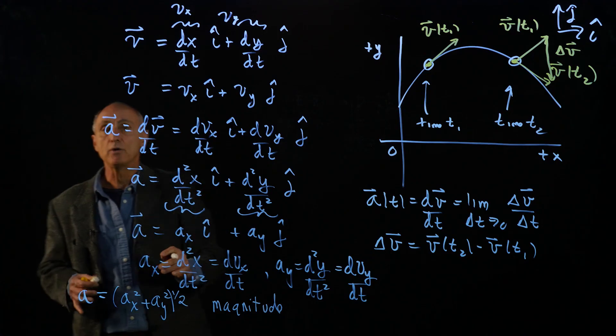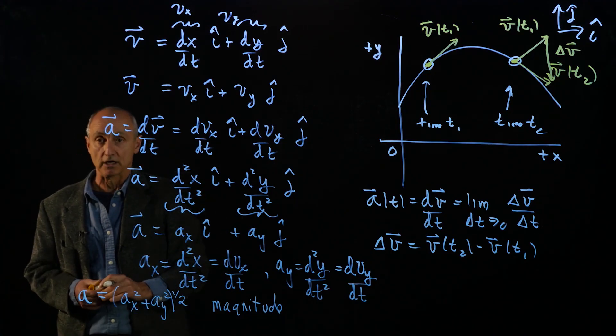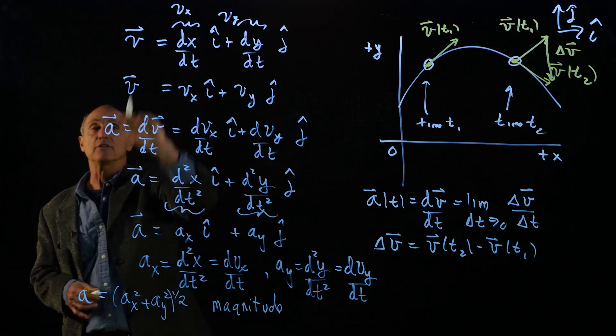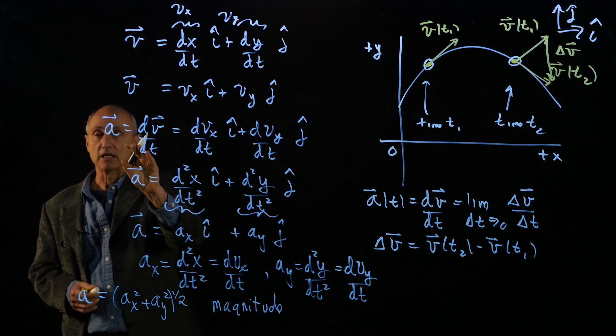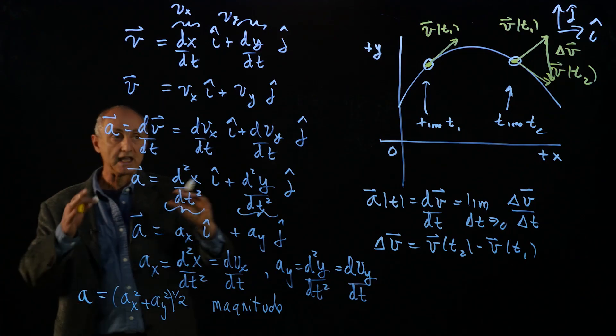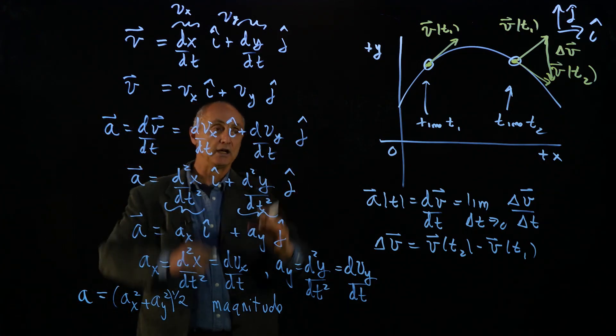And so now we've described all of our kinematic quantities in two dimensions. The position, the velocity as the derivative of the position, and the acceleration as the derivative of the velocity, where each direction is treated independently.